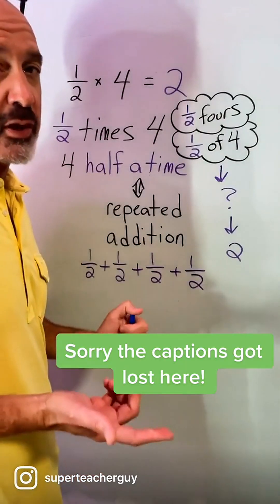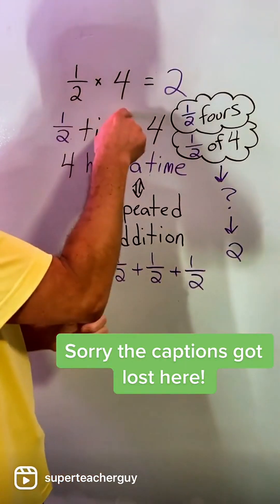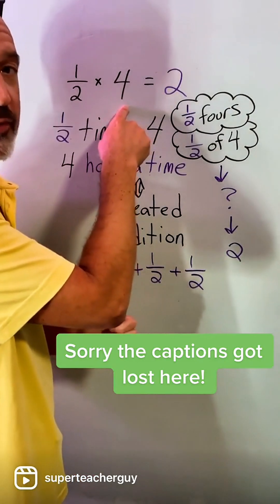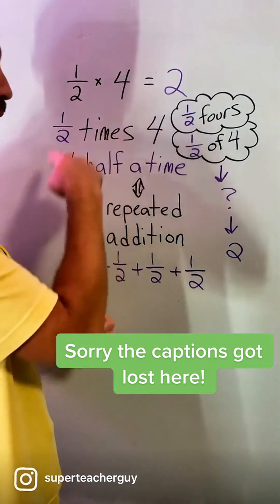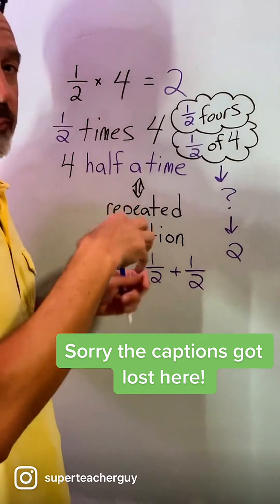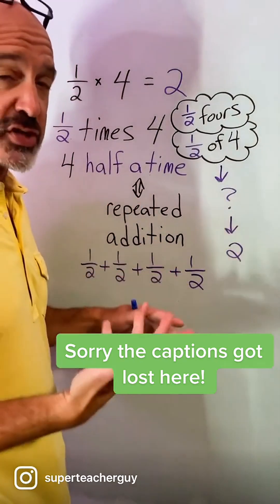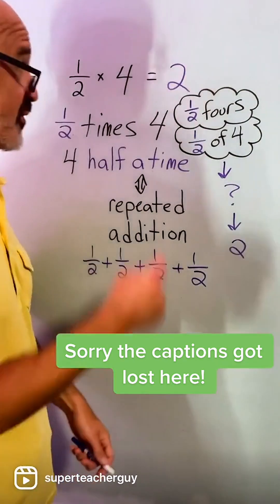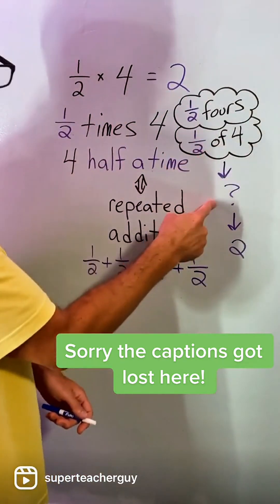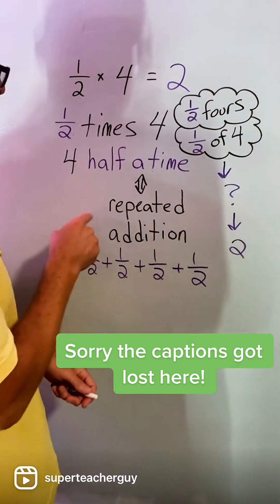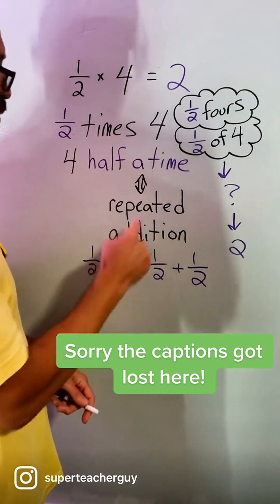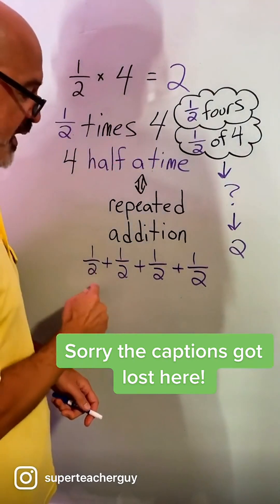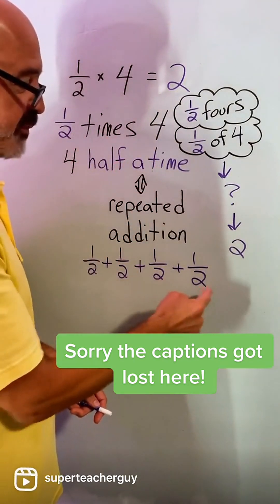Everything I explained earlier about 2 times 4 applies to a half times 4 as well, to help make sense. This might not make sense at first, but it's important to have this discussion earlier and often with your child. To make sense: half of 4 is 2. It's a half times 4, but it's also a half 4 times — half plus half plus half plus half is 2.